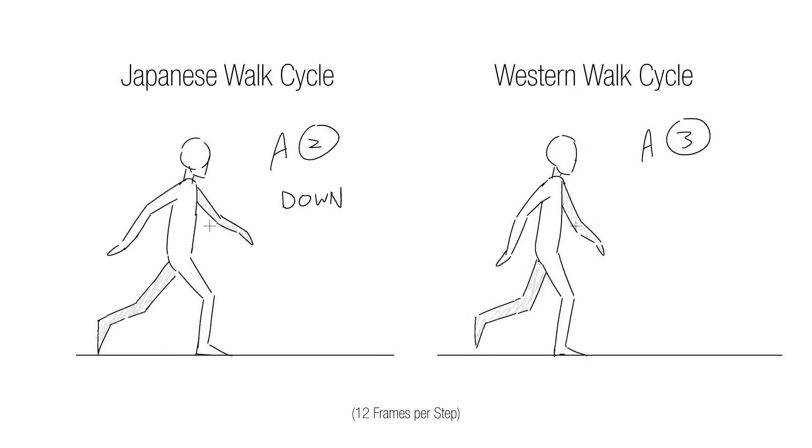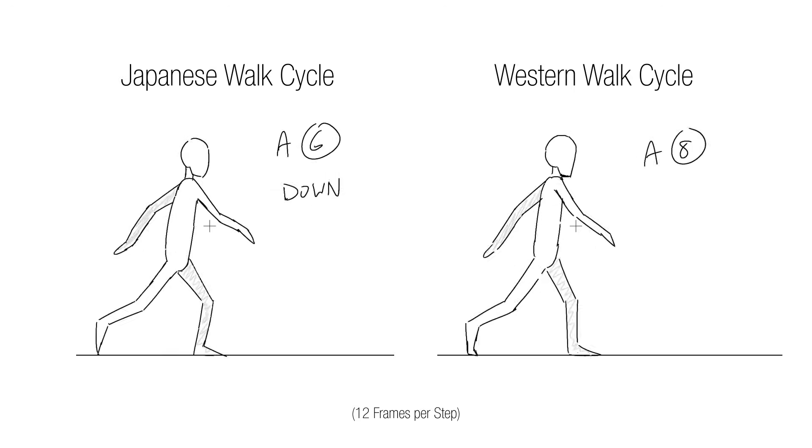I feel like even though there are less drawings in the Japanese walk cycle, the stronger poses make it feel more appealing, and it's just also easier to do. In fact, a lot of western animators will not even animate walks at 12 frames a step even though it is the most common walk speed. They would make the walk slower or faster so that they can use those four main poses by making the walk at 8 frames a step or 16 frames a step. But I do think the way that we do the same things differently across cultures is pretty interesting.